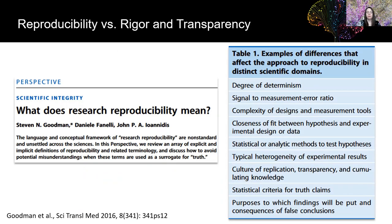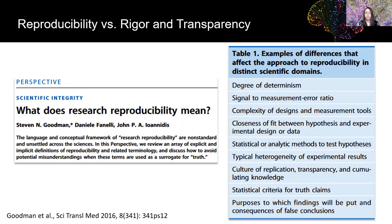The topic of rigor and reproducibility has been increasingly discussed in the scientific community due to issues of trying to reproduce high-profile experiments. One problem, however, is that not everyone agrees on the definition of reproducibility. What we really want to know is whether or not something is true, but sometimes things that are true are difficult to reproduce in all contexts, and sometimes things that are reproducible are not necessarily useful. For example, if you repeatedly use a biased study design, you'll probably be able to reproduce a biased result really well.